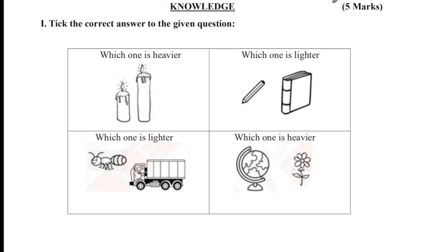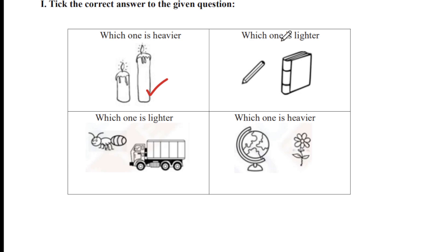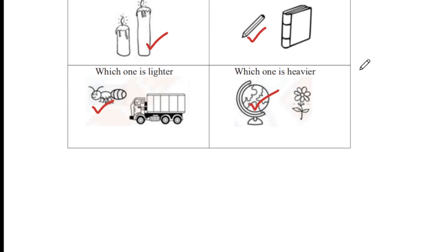The first section is Knowledge, and you're going to score five marks. Take the correct answer to the given question. Which one is heavier? Two candles are given — one is shorter and one is longer. The longer candle will be heavier. Next, which one is lighter? A pencil and a book are given — obviously the pencil is lighter. Which one is lighter — a honeybee or a truck? Obviously the honeybee is lighter. Which one is heavier — a globe or a flower? The heavier one is the globe. So you can easily score five marks for this knowledge part.